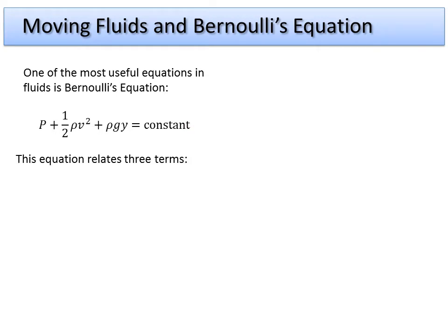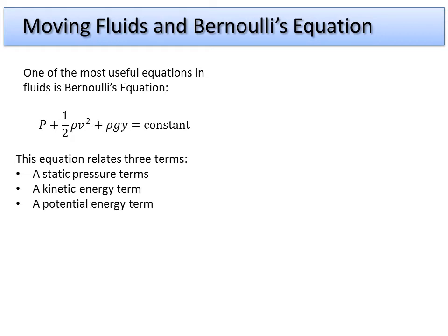These three terms are each related to different things. The first term, p, is a static pressure term — if we put a gauge on there, this is what the gauge would read. The second term, one-half rho v squared, is a kinetic energy-related term, analogous to one-half mv squared but using rho since we're dealing with pressure. The third term, rho gy, looks like a potential energy term — it's rho gh instead of mgh, where h is your height.